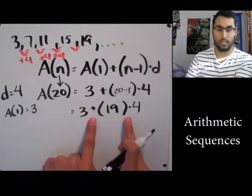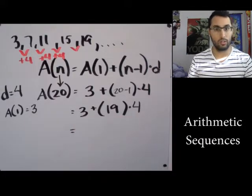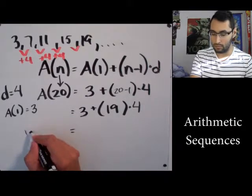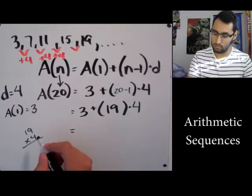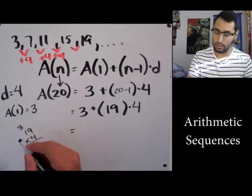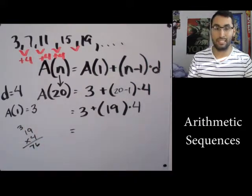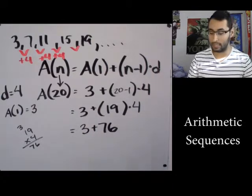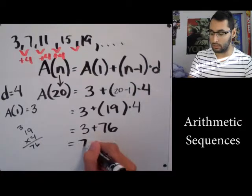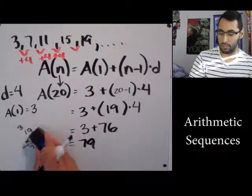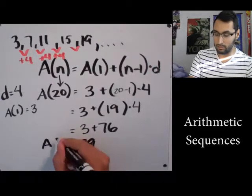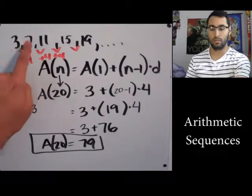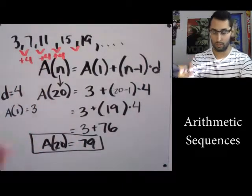Now we have addition and multiplication, so what do I do first? I do multiplication. So we have to multiply 19 times 4. Let's do some scratch work - 9 times 4 is 36, carry the 3, that's 7, so it's 76. So I'm gonna have 3 plus 76, and finally just add them. Well it's just 79. So what we found is that A(20) is 79, meaning if I were to line up all these numbers forever, the 20th term would be 79.